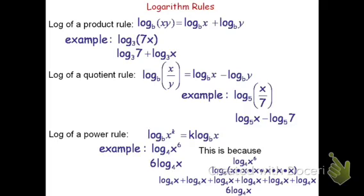This explains the log of a power rule. Now these three rules may look different, but they really all relate to the log of a product rule. The quotient rule can be rewritten as log base b of x times y to the negative 1, and then we can think of it as the same thing as the product rule.